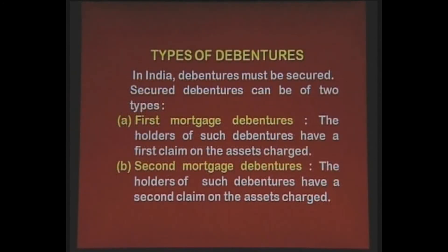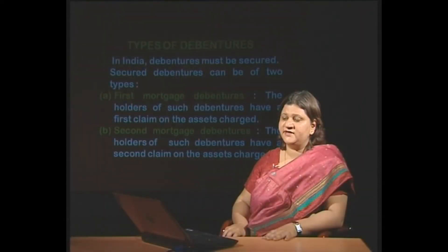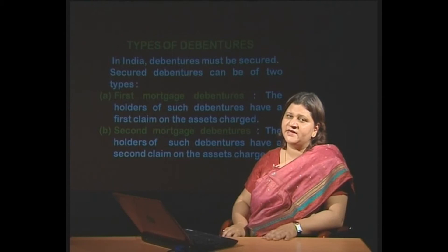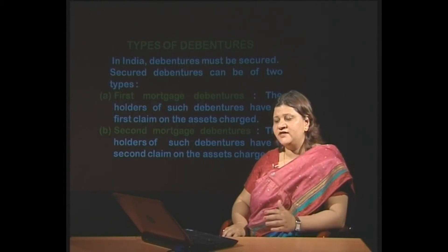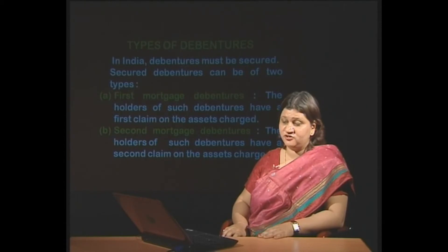When assets are mortgaged and amount is realized, the principal amount as well as the unpaid amount of interest on such debentures are being secured. In India, debentures must be secured. Secured debentures are again of two types: first mortgage debentures and second mortgage debentures. By first mortgage debenture, we mean that the holder of such debentures has a first claim on the assets charged. When we talk about second mortgage debentures, the holders have a second claim on the assets charged. So the priority basis is set under secured debentures — first mortgage debentures would be paid off first, and then the second mortgage debentures.